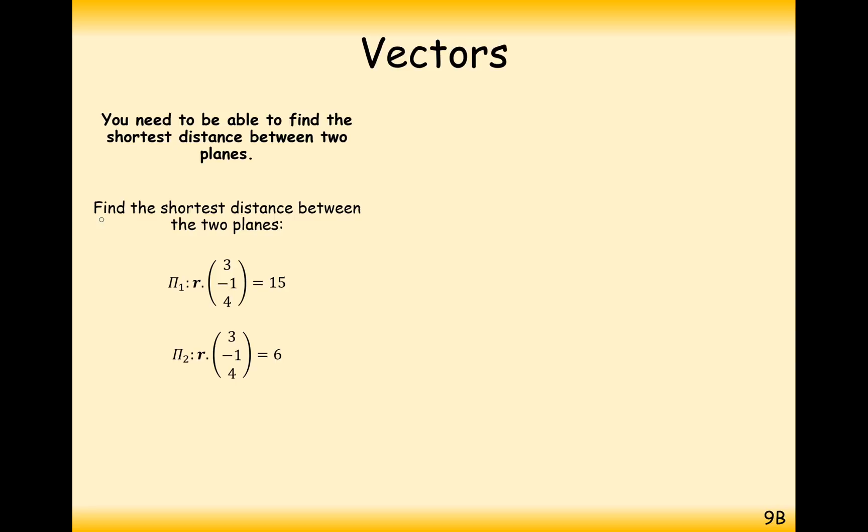The question is, find the shortest distance between the two planes R·(3,-1,4) equals 15 and R·(3,-1,4) equals 6. We can tell that these are parallel planes because the perpendicular vectors are going to be the same, but the distance away from the origin, which is in proportion to 15 and 6, is going to be different.